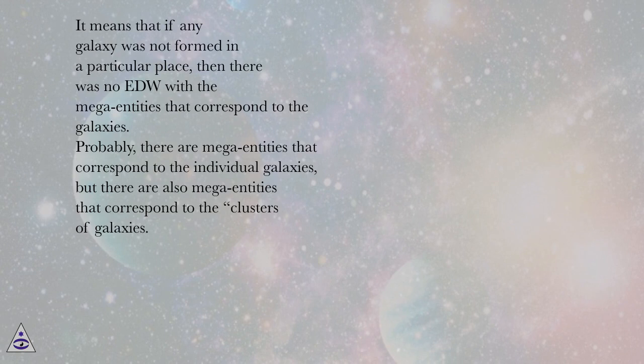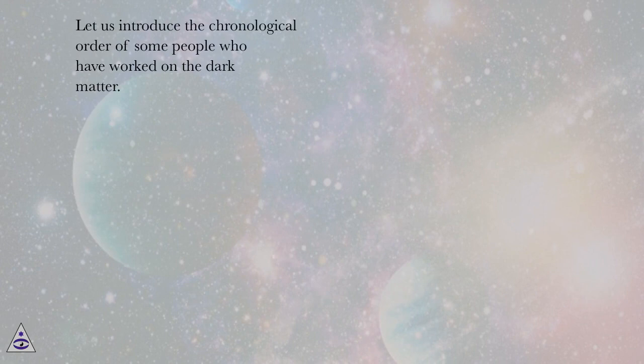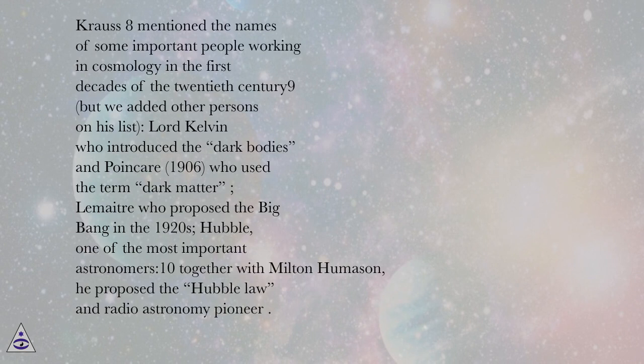Let us introduce the chronological order of some people who have worked on the dark matter. Krauss mentioned the names of some important people working in cosmology in the first decades of the twentieth century, but we added other persons on his list: Lord Kelvin who introduced the dark bodies and Poincaré (1906) who used the term dark matter; Lemaître who proposed the Big Bang in the 1920s; Hubble, one of the most important astronomers; together with Milton Humason, he proposed the Hubble law and radio astronomy pioneer.